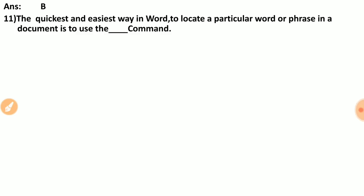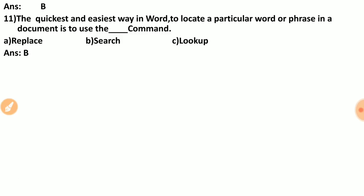Question eleven: the quickest and easiest way in Word to locate a particular word or phrase in a document is to use a dash command. Options are: replace, search, look up. The correct answer is B — use the Search command.